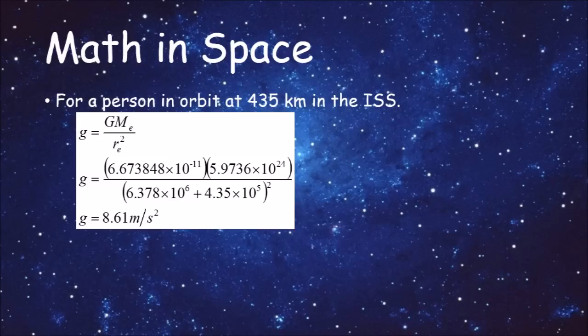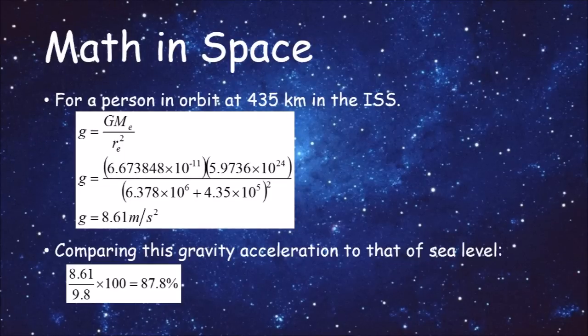Let's do math in space. For a person at an altitude of 435 kilometers on the ISS, if we take the gravitational formula and plug in all the numbers, we get a gravitational acceleration of 8.61 meters per second squared. If we compare the acceleration of gravity in the ISS with the acceleration of gravity at sea level at 9.8 meters per second squared, we find that in the ISS they are subject to 87.8% of sea level gravity.